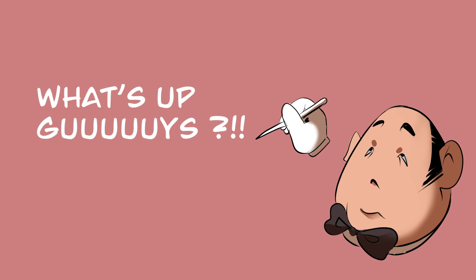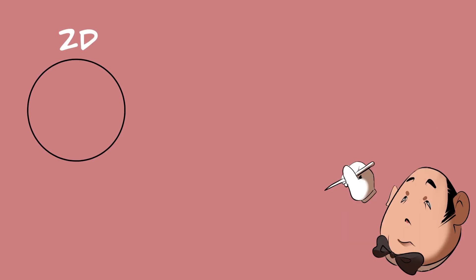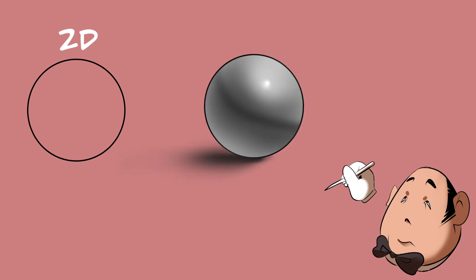But before we start, we need to know what drawing is. Drawing is turning a 2D shape — in this case a circle — into a 3D one, which is a sphere, by directing a light source on it so lights and shadows form. And that's how you make the illusion to the viewer that a 2D shape turned into a 3D one. And that's it.